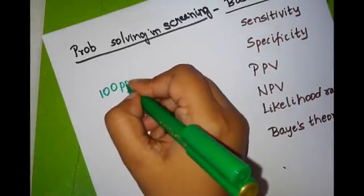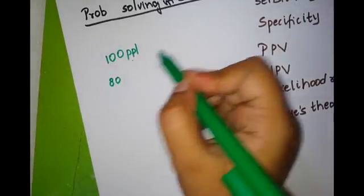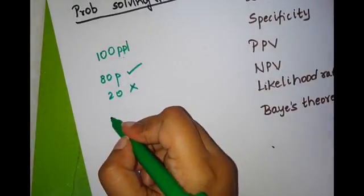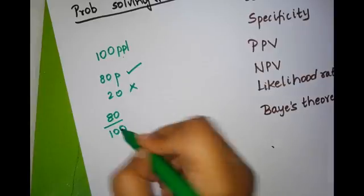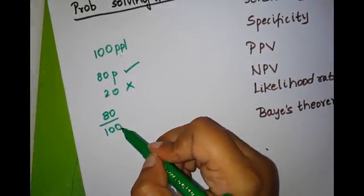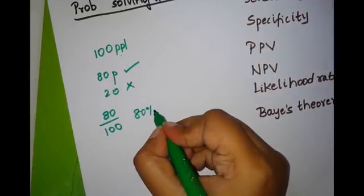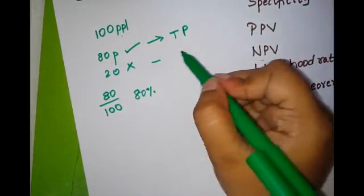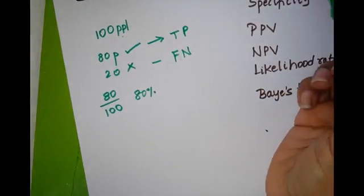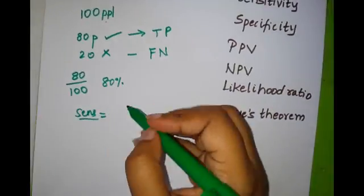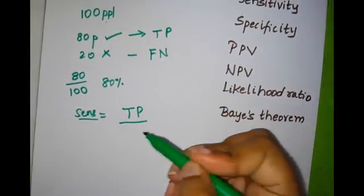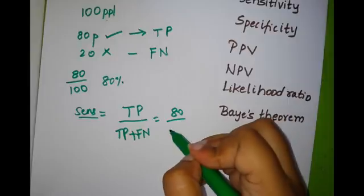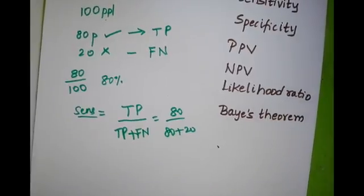What is sensitivity? Let's say 100 people had the disease and this test detected 80 persons correctly and 20 persons it did not detect. The sensitivity of the test is 80 divided by 100. The 80 persons were true positive and 20 persons were false negative. So sensitivity can be written as true positive divided by true positive plus false negative — that's 80 by 80 plus 20.